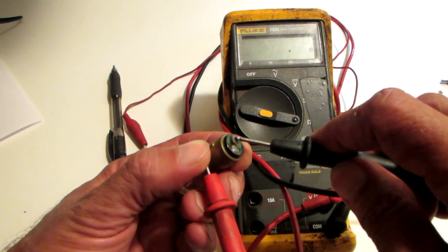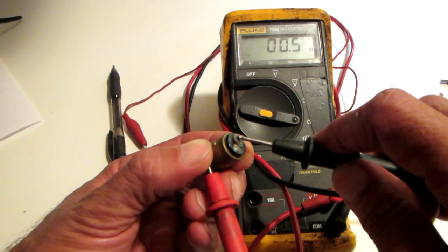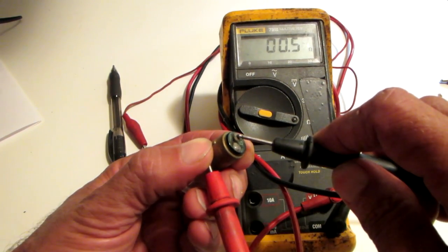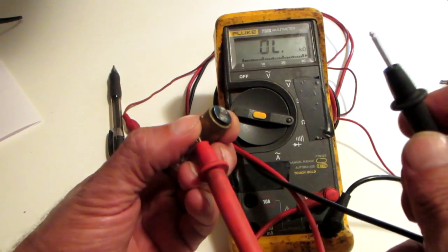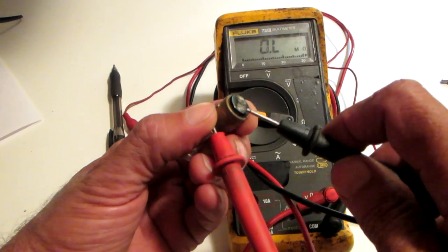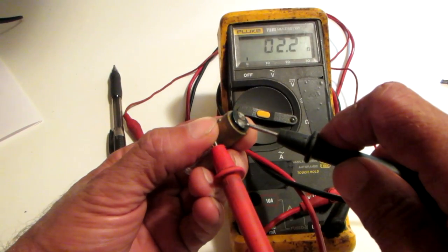And then we can check the other side and the other filament. It's reading 0.5. And that's all there is to it. And your light bulb is good to go. Thanks for watching.